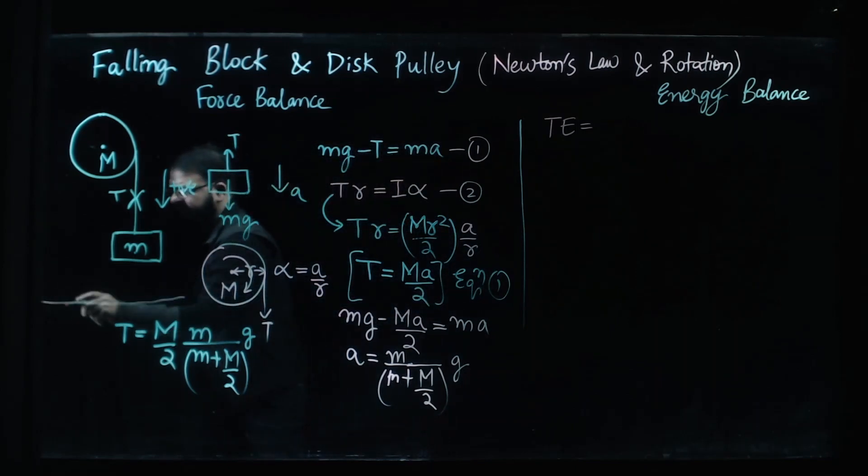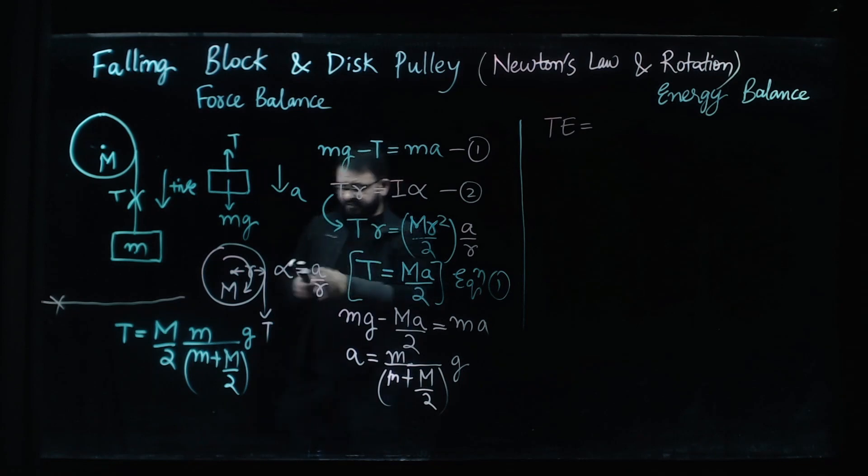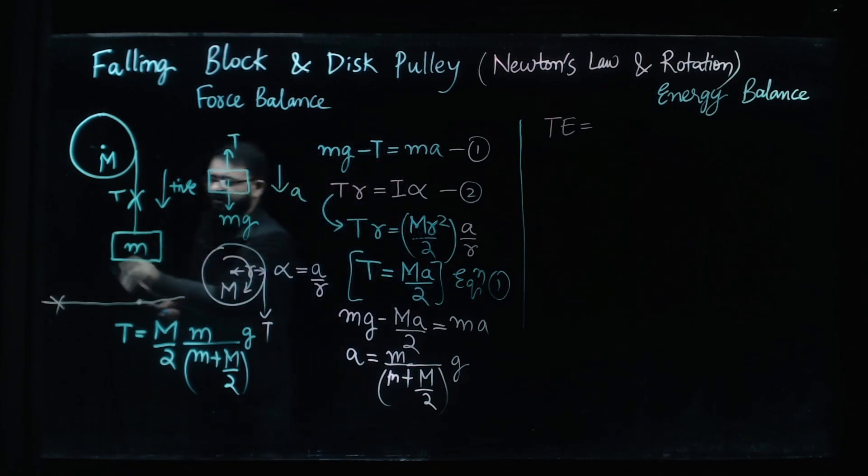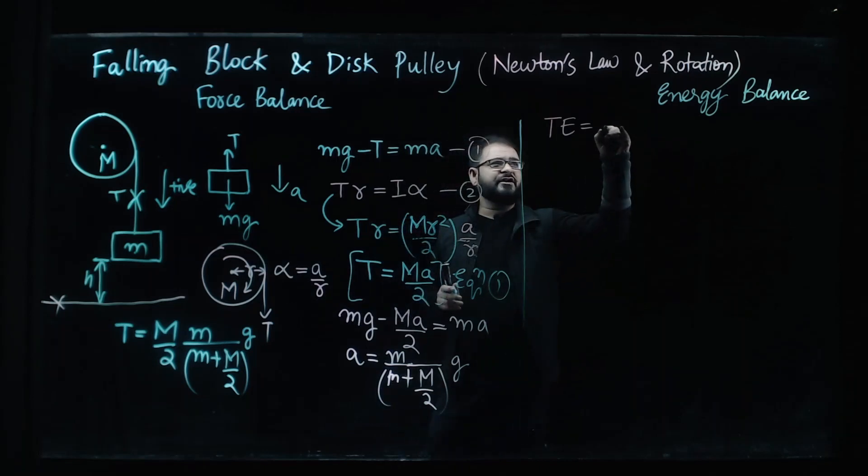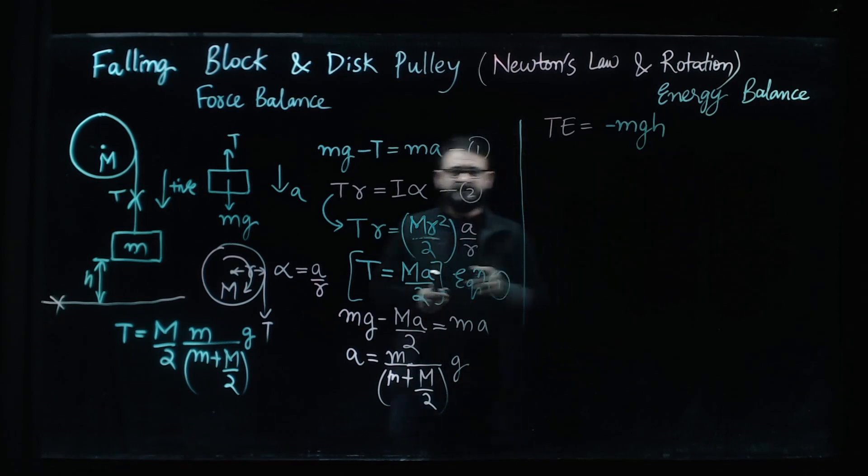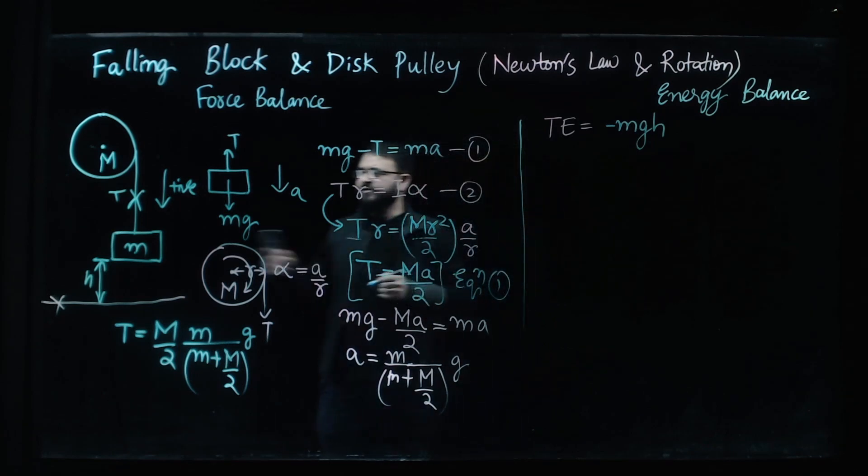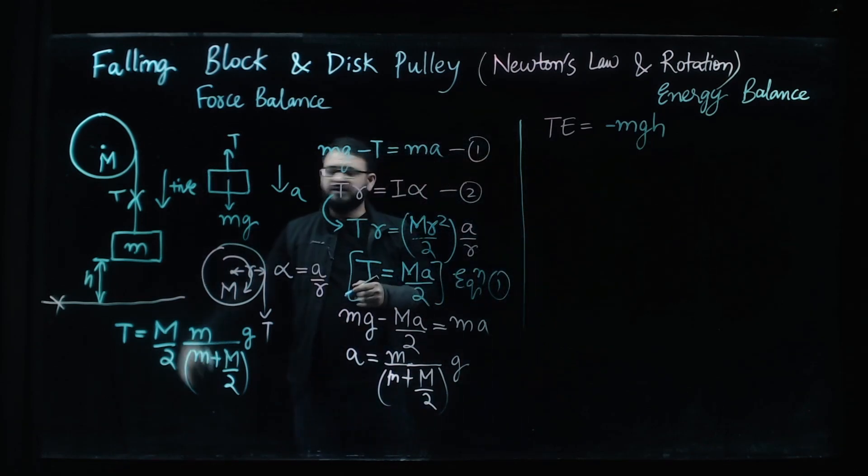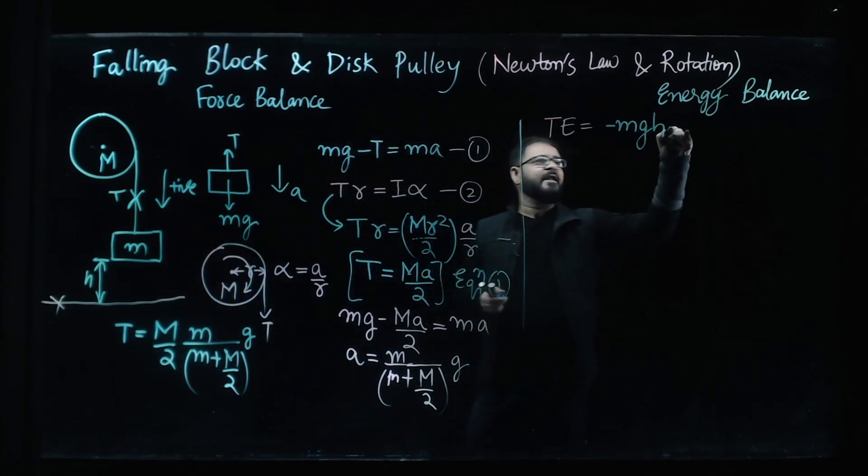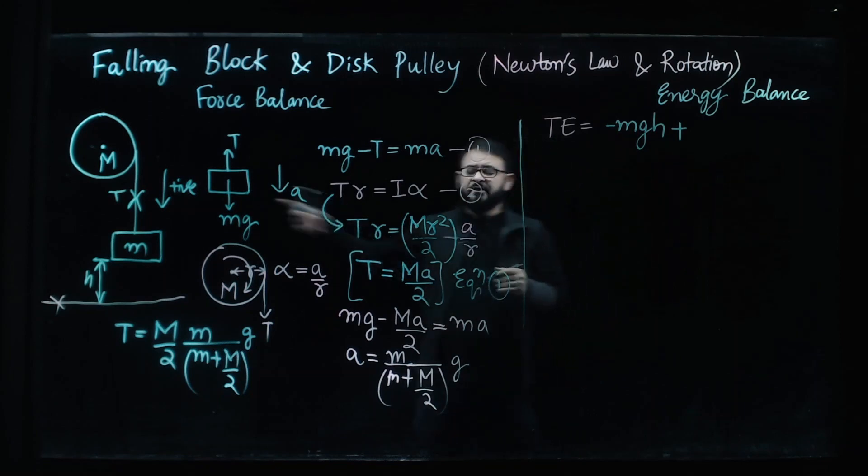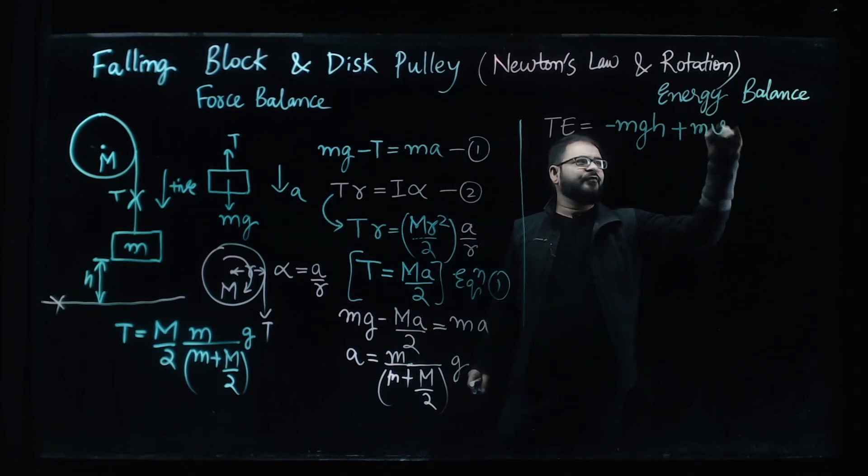Now we will take the ground as a reference and we will assume this block is at a height h so we can write the total energy as a combination of potential energy. Potential energy of the block is minus mgh because our reference downwards is the positive while we are measuring the height h upwards and then we take care of the kinetic energy mv squared by 2.